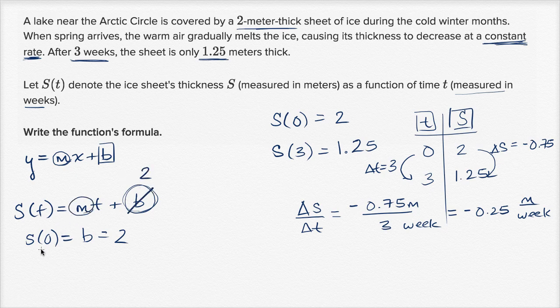And what is m? Well, we've already said that's our rate of change. That is our slope. That is how much our thickness changes with respect to time. And we already figured out that that's negative 0.25. So m is negative 0.25.